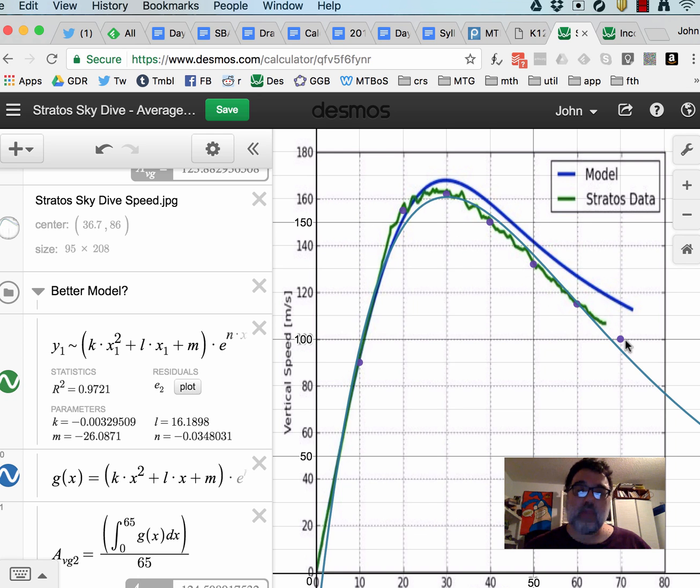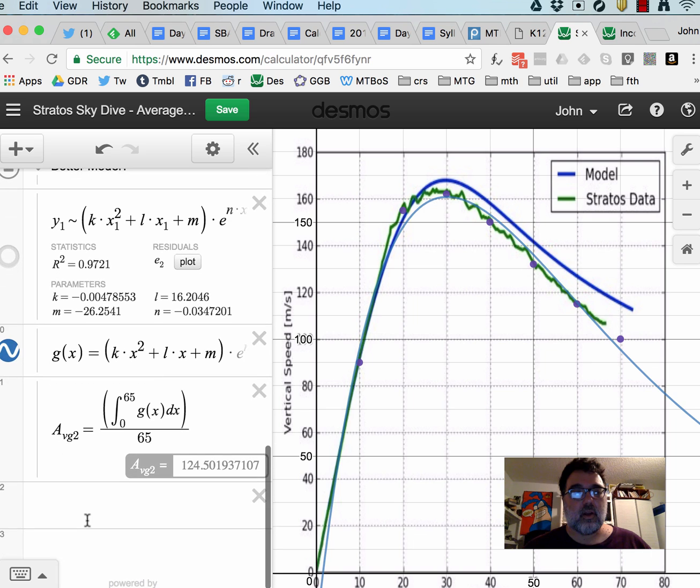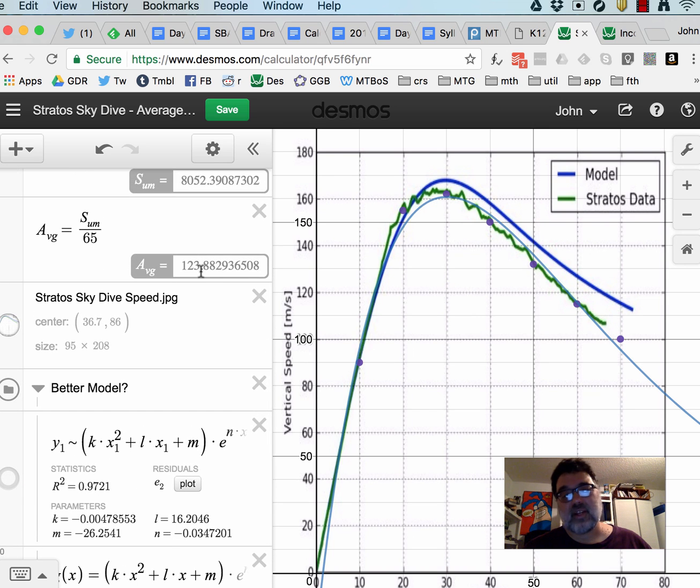So if we check that regression, we get something that maybe looks a lot more like what it looks like. So we've got the function over here, integrate and divide to get the average. Here we get 124.5, so not too much different. So I'm pretty confident that my choice of model didn't make too big an effect, and now we've got a good average speed for this data.